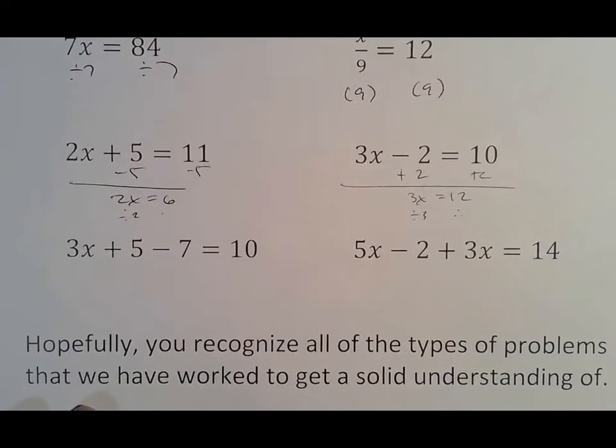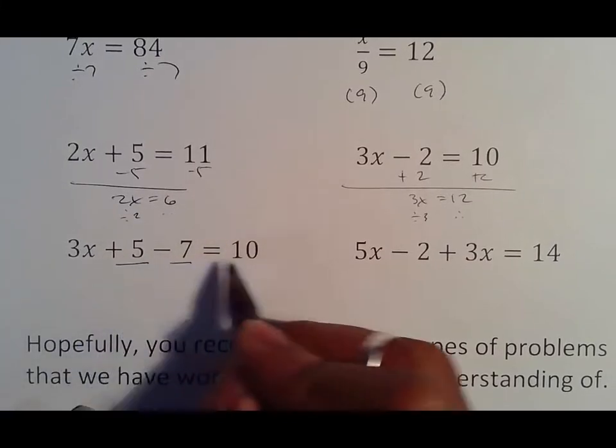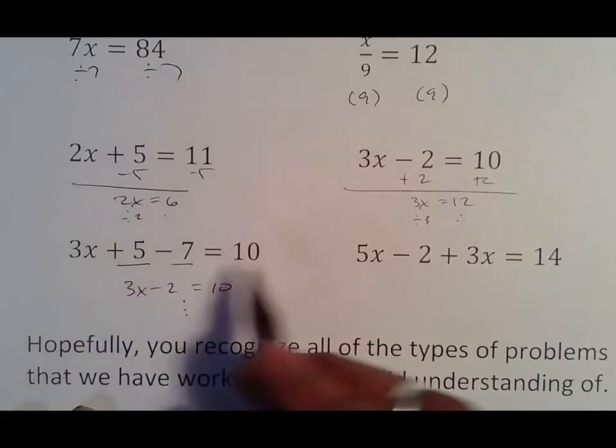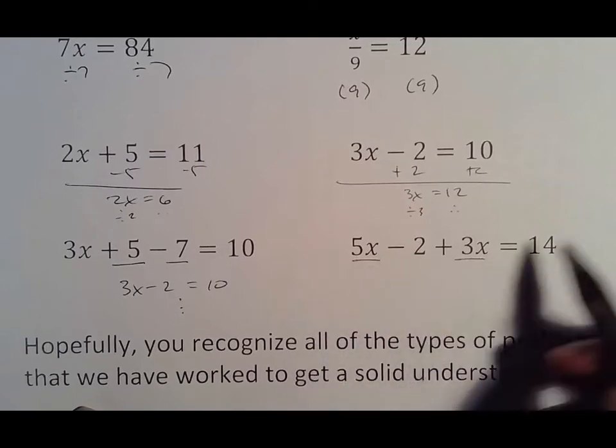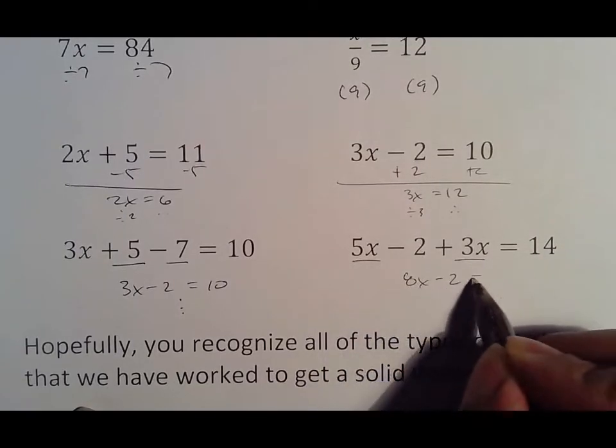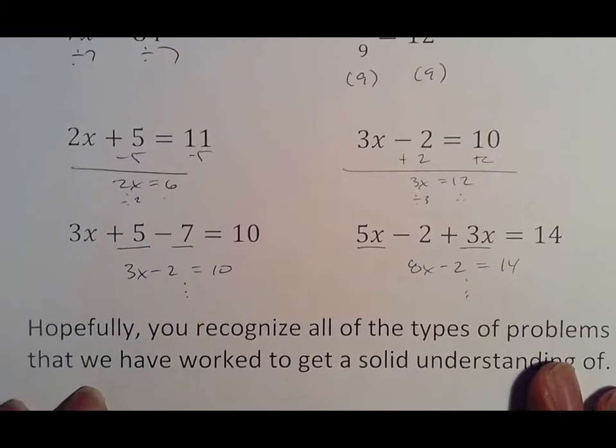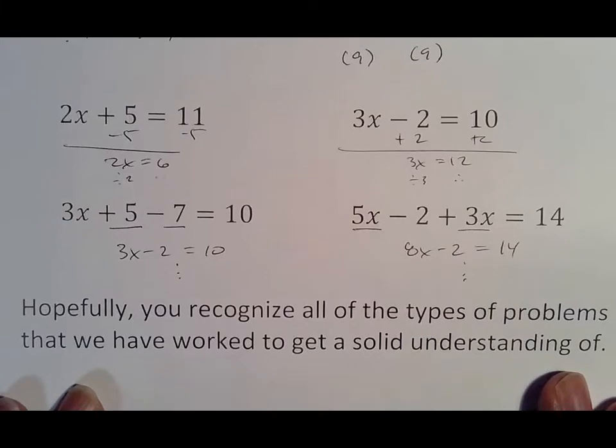And then the last two that we saw last week, which is the one where it's more than two terms on the side, so the first thing we would do is put them together and then from there do what we did on the other two-step equation. Same thing over here: 5x minus 2 plus 3x, we put the like terms together making 8x minus 2 equals 14, and again following our instincts. Hopefully you recognize all the types of problems we've worked to get an understanding of.